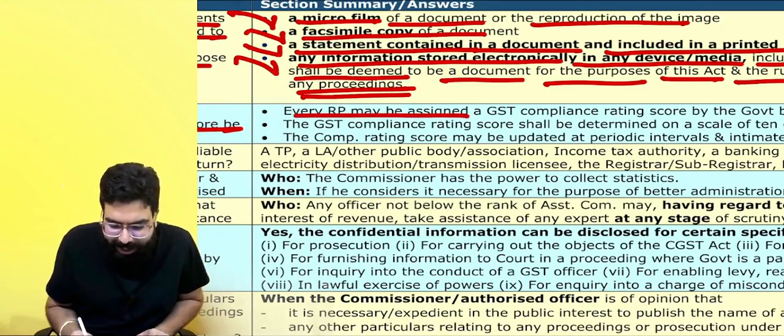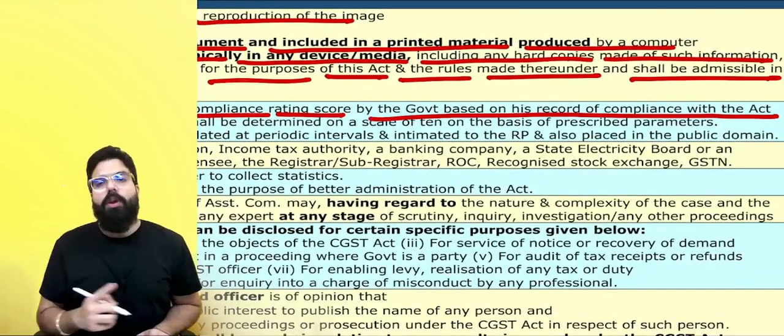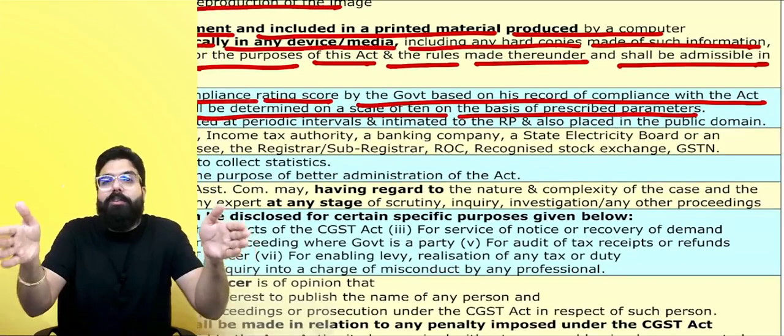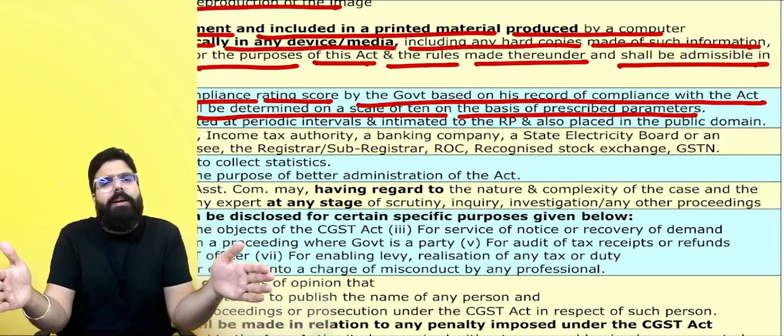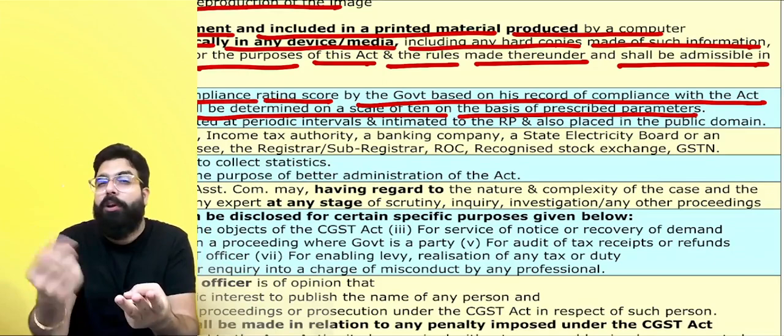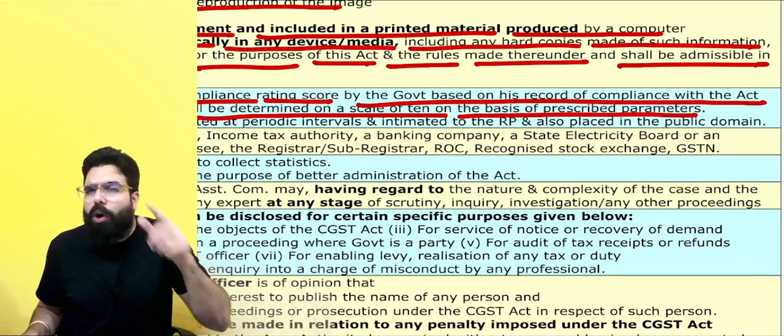Every person may be assigned a GST compliance rating score by the government based on their record of compliance. The rating shall be determined on a scale of 10 based on prescribed parameters — such as whether he files returns on time, takes correct ITC, and has not committed any fraud. If fraud is done, the rating will come down.